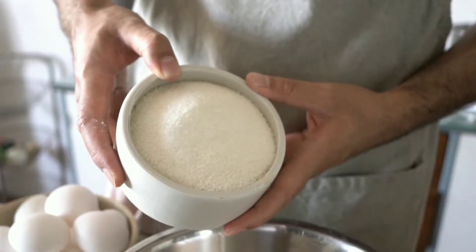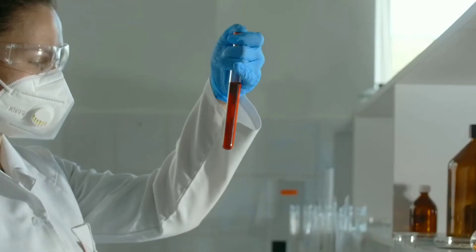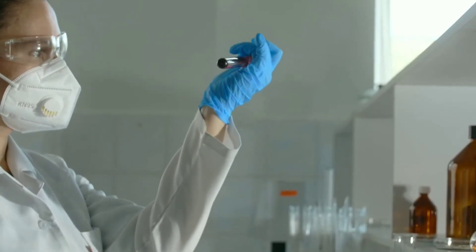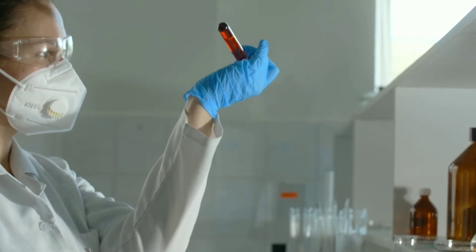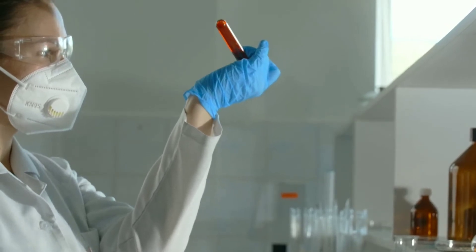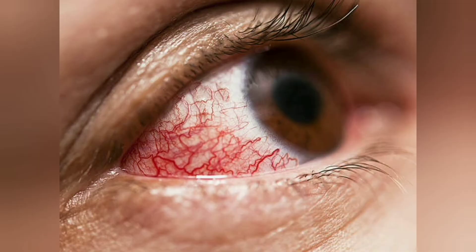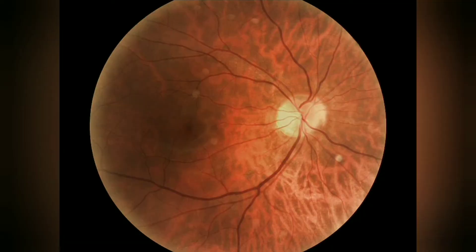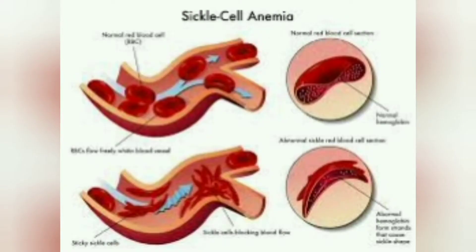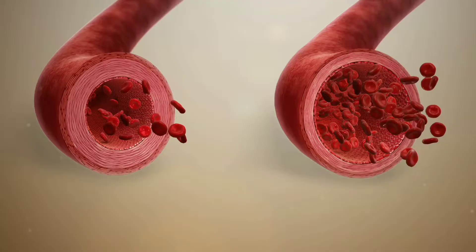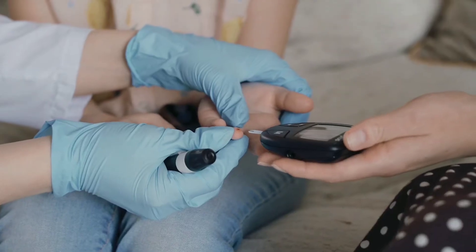Too much sugar in your blood can lead to blockage of the tiny blood vessels that nourish the retina, cutting off its blood supply. As a result, the eye attempts to grow new blood vessels, but these new blood vessels don't develop properly and can leak easily. The damage to your eyes starts when sugar blocks the tiny blood vessels that go to your retina, causing them to leak fluid or bleed.